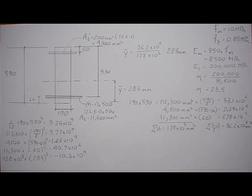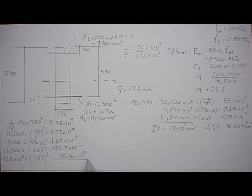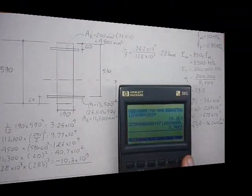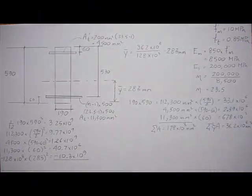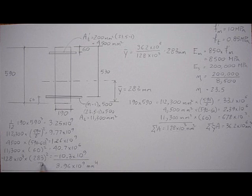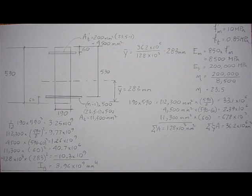So now if we add up all these values here, we're going to get 3.96 e to the ninth, and that is the gross inertia of the section.